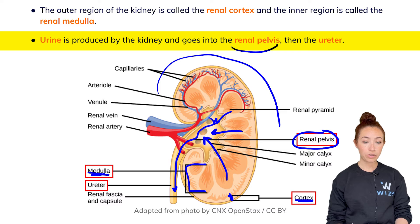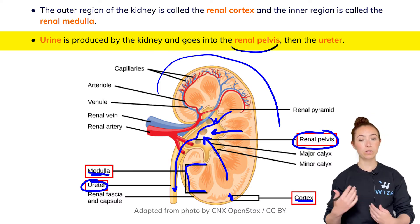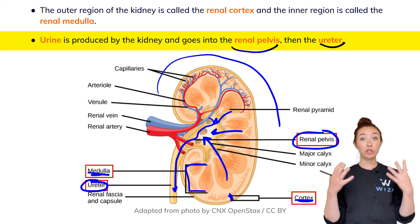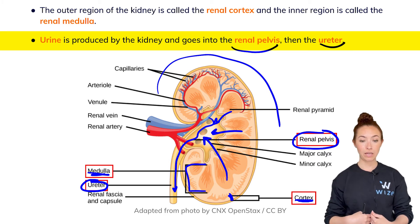From the renal pelvis, the urine is going to collect and go down the ureters. We have one ureter on each side because they're connected one to each kidney, and that's the main tube that collects the urine being produced by the kidney.